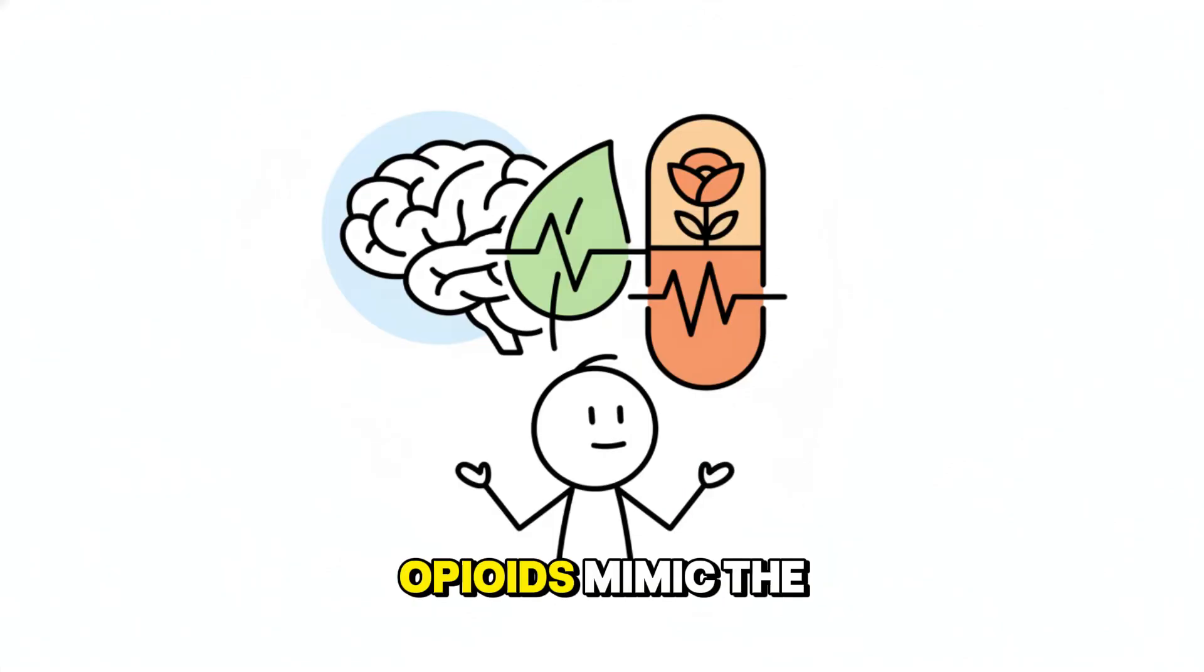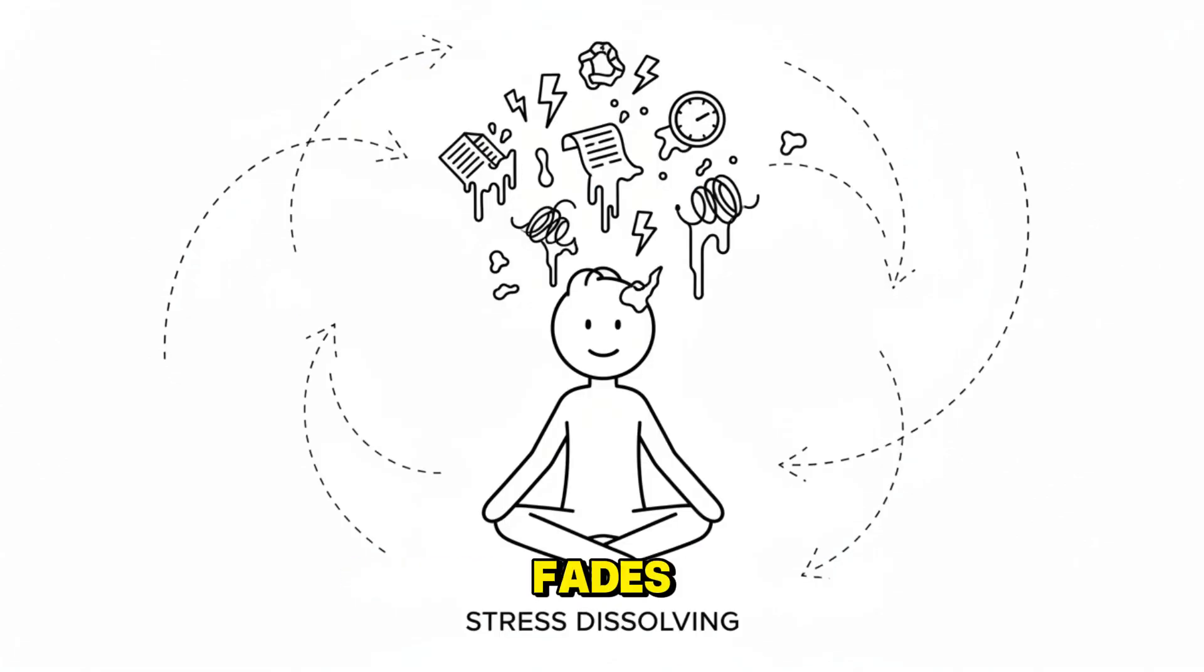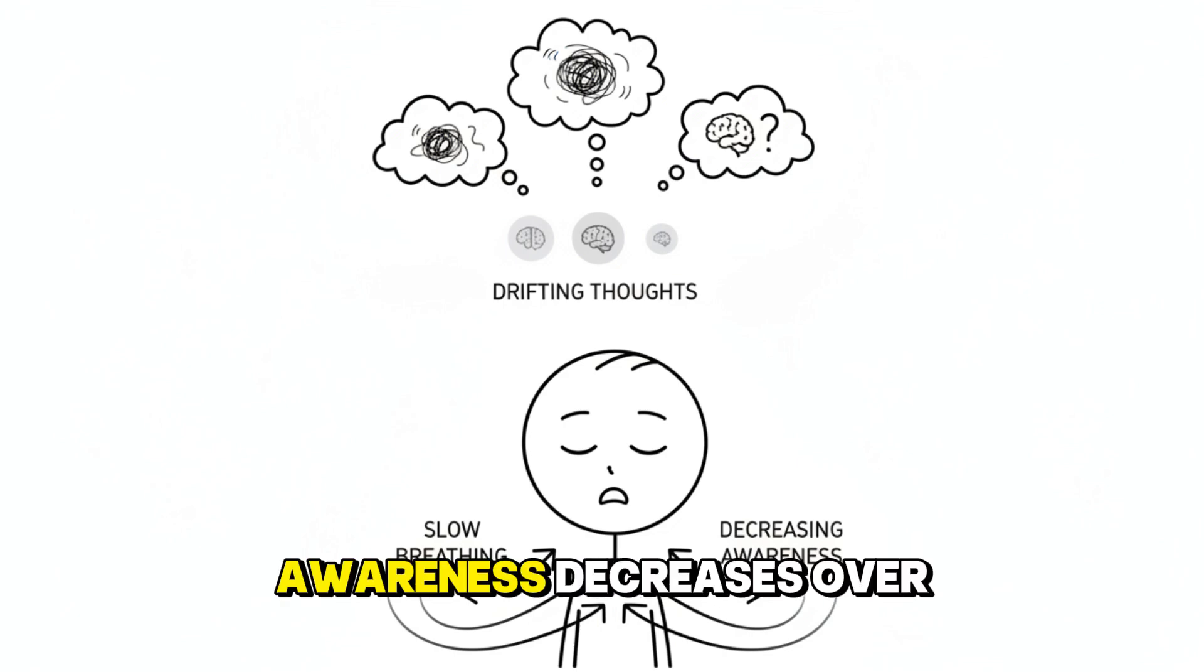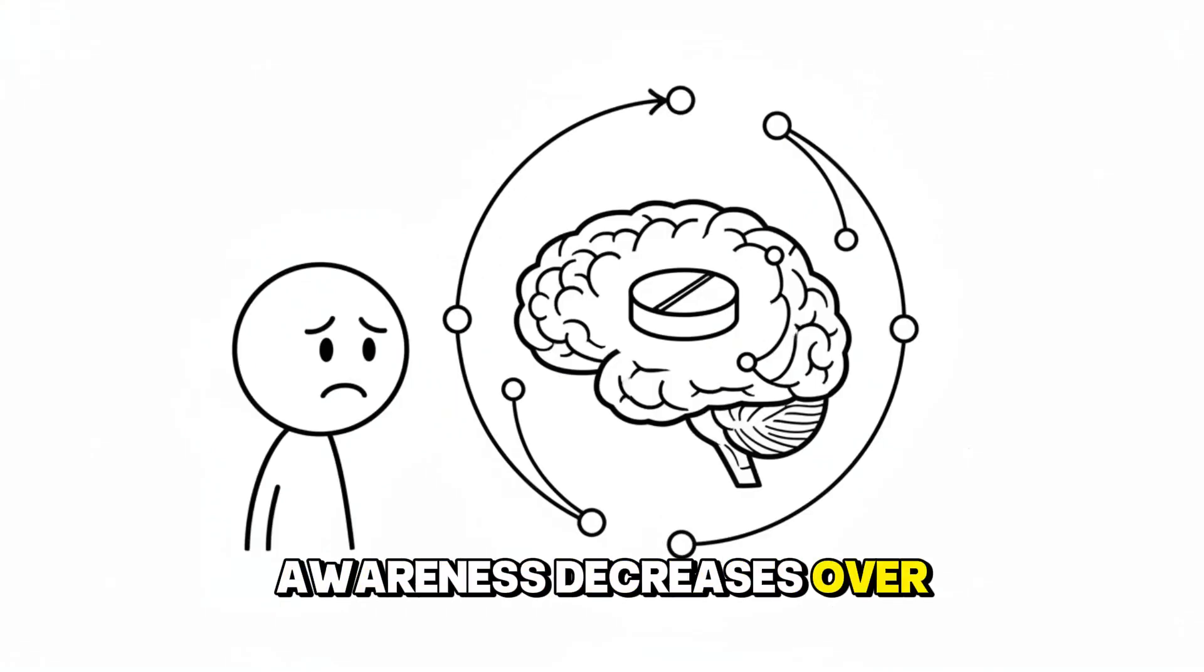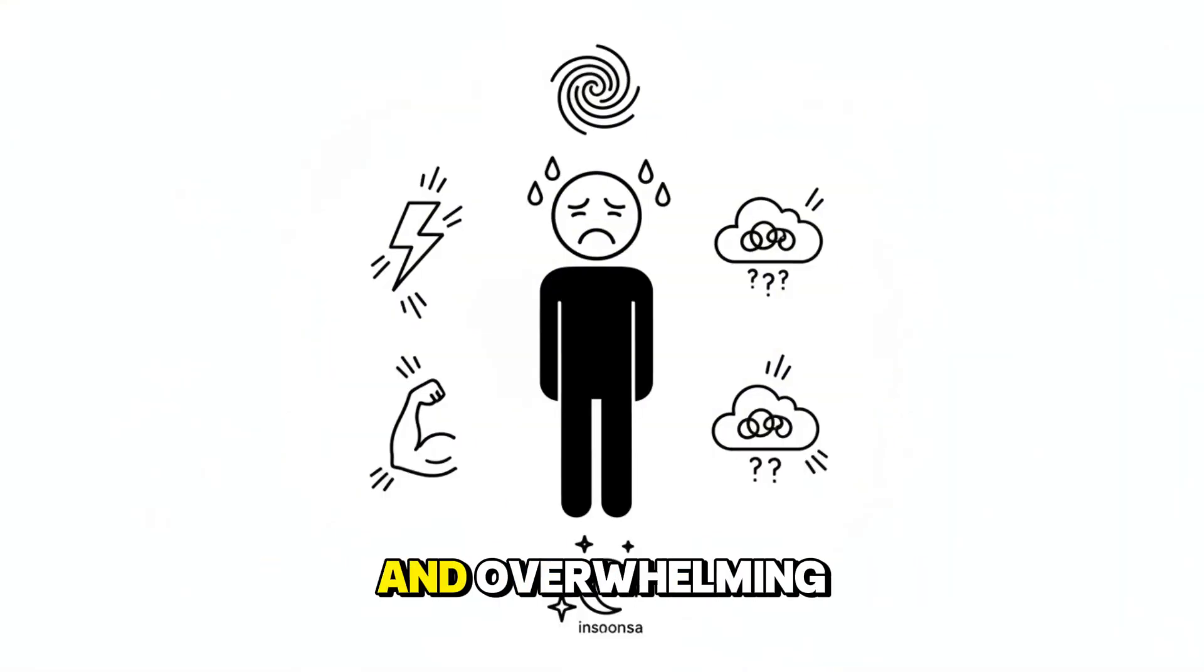Opioids mimic the brain's natural pain relief chemicals. The effect is deep comfort. Warmth spreads through the body. Stress dissolves, pain fades. Everything slows, in a way that feels safe and controlled. But this comfort has a limit. Breathing slows, thoughts drift. Awareness decreases. Over time, the brain's reward and survival systems reorganize themselves around opioid use. Withdrawal becomes sharp and overwhelming. Muscle pain, nausea, sweating, anxiety, and difficulty sleeping.